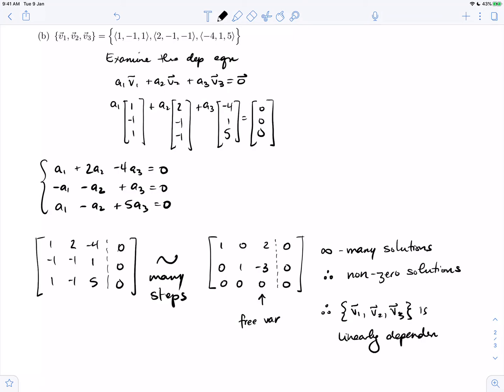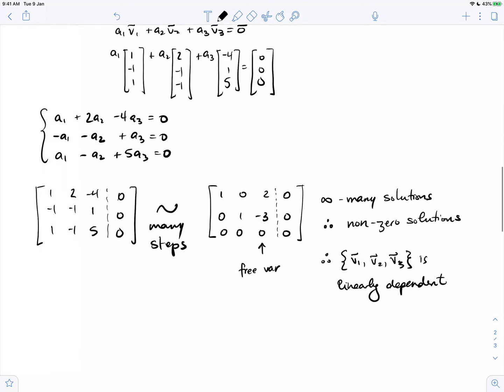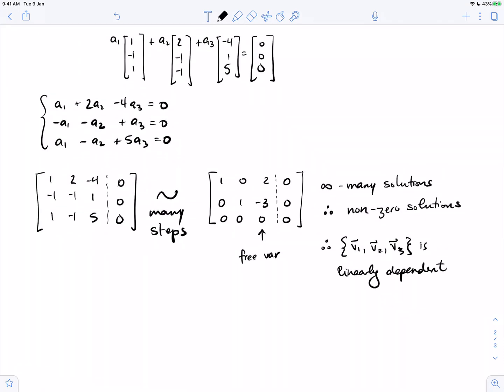Now we were also asked to give a dependence relation, which means that we have to write down one particular non-zero solution of this vector equation, of this dependence equation. So let's write down the full system, the full solution to the linear system. a3 is free.